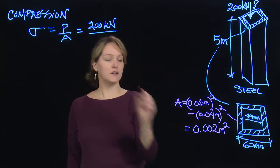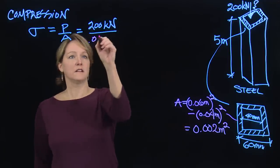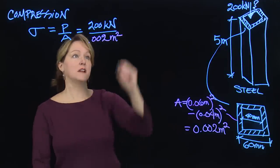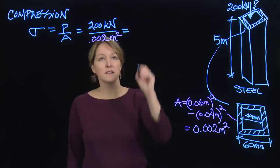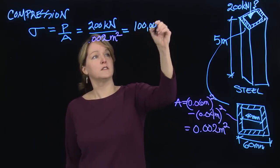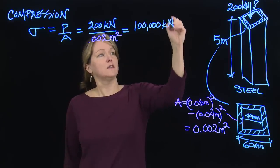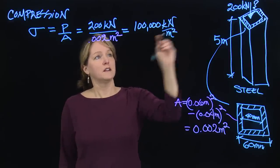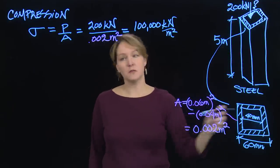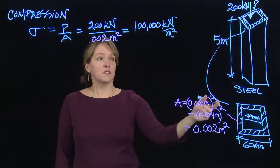That's my cross-sectional area that I can then use up here in this equation. That'll allow me to calculate the stress, and that stress is going to be 100,000, a fairly high number, kilonewtons per meter squared. So that's the stress that I get due to this 200 kilonewtons pushing down on the column with this cross-section.